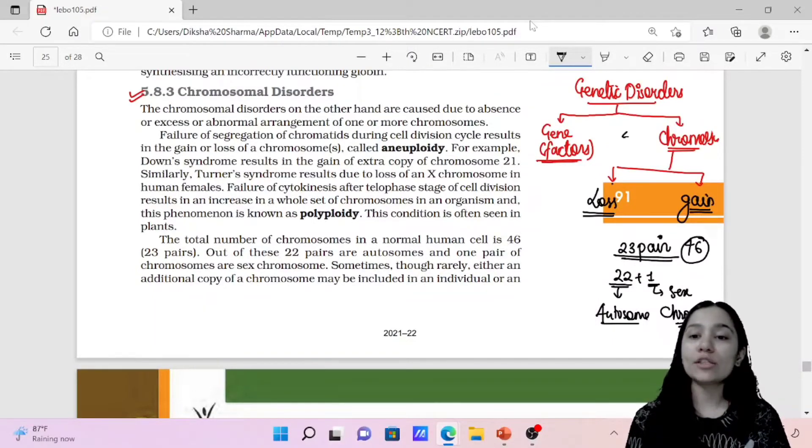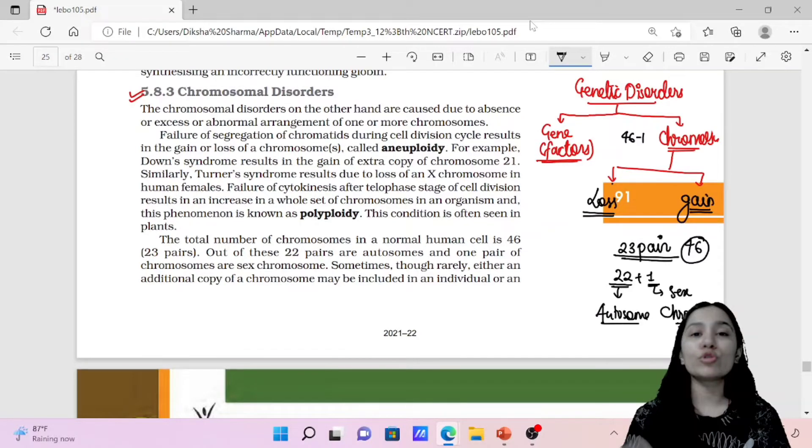So if 46 chromosomes is minus 1, then it will be chromosomal disorder. 46 plus 1, if it is plus 1, then it will be chromosomal disorder.